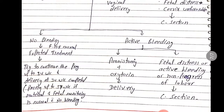If there is active bleeding, perform amniotomy and start oxytocin for delivery. If fetal distress or non-progress of labor occurs, proceed to cesarean section. Thank you.